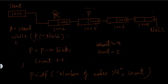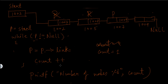Then again this while condition will be checked. This time also p is not equal to null, so the condition is true and this statement will get executed. Now p->link means the link part of this node, which is the address of the next node, so the address of the next node will be assigned to p. So p is now storing the address of this node. Then count++ will increment the value of count by 1, so count will become 1 plus 1 equals 2.